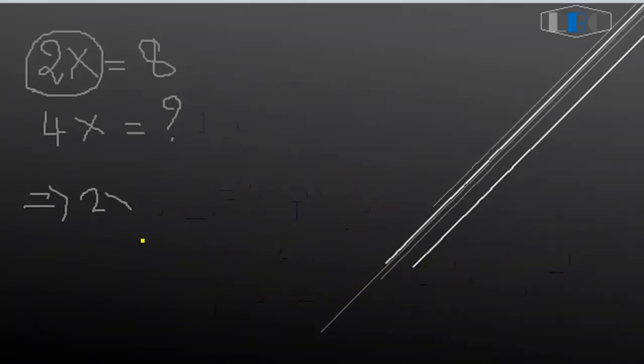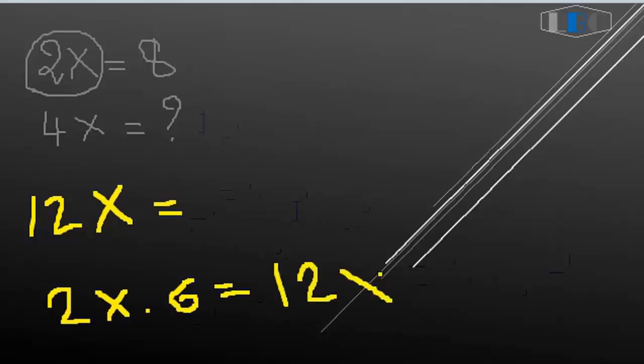So, so 12X. So 12X equal what? 12X, you can see, 2X and 6 equal, equal 12X, yes. So 2X equal what? 2X equal 8, so 8 and 6 equal, equal 48. 48, okay, this answer.